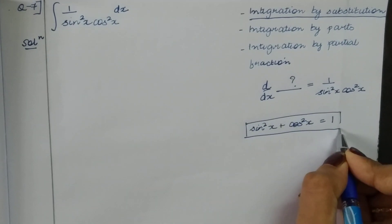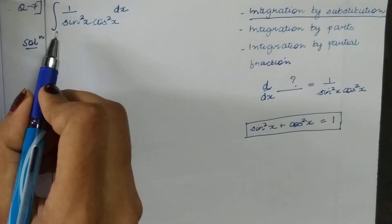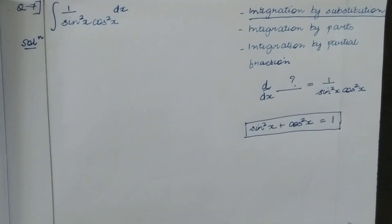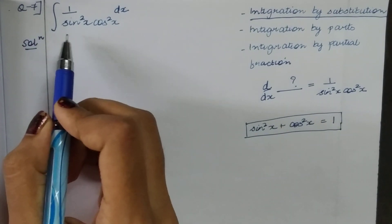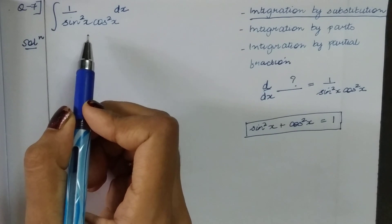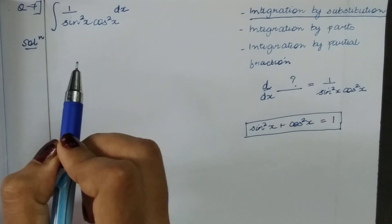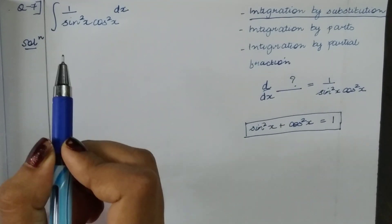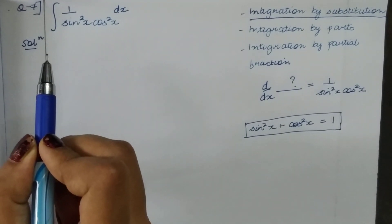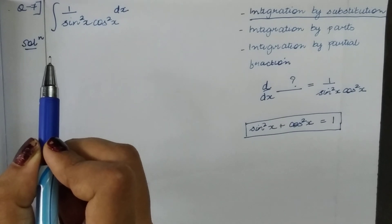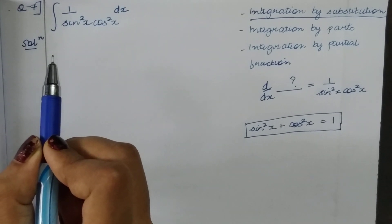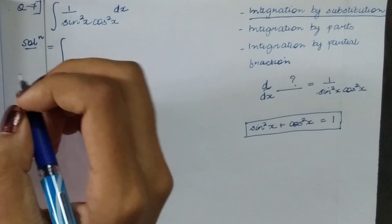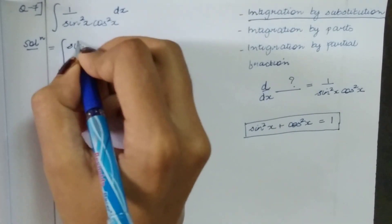What do we do? We substitute sin square x plus cos square x in the numerator. That is equal to the integral of sin square x plus cos square x over sin square x times cos square x, dx.